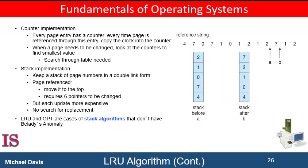We can also use a stack. Another approach to implementing least recently used replacement is to keep a stack of page numbers. Whenever a page is referenced, it is removed from the stack and put back on the top. In this way, the most recently used page is always at the top of the stack, and the least recently used page is always at the bottom of the stack. This is shown in the figure on the right. Because entries must be removed from the middle of the stack, it is best to implement this approach using a doubly linked list with a head pointer and a tail pointer.